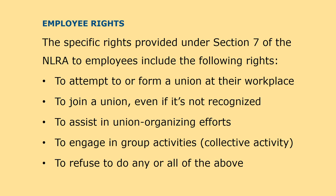The NLRA protects employees from employer and union misconduct, such as attempts by employers to prevent unions from organizing, and attempts by unions to coerce employees into joining them. The NLRA also ensures that employees have the right to organize a union where none currently exists. The specific rights provided under Section 7 of the NLRA include: the right to attempt to form a union in their workplace, the right to join a union even if it's not recognized, the right to assist in union organizing efforts, the right to engage in group activities called collective activity, and the right to refuse to do any such work.